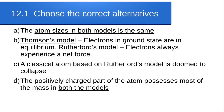Question d: the positively charged part of the atom possesses most of the mass in dash. The positively charged part of the atom in both Thomson's and Rutherford's models is based in the nucleus, hence both of them have the most mass in the positively charged part of the atom.